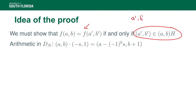That condition is equivalent to saying (a prime, b prime) times H equals (a, b) times H. Using the group law of D sub n as a semi-direct product, (a, b) times H contains just (a, b) itself — from multiplication by the neutral element — and (a minus minus 1 to the b times S, B plus 1) from multiplication by the other element (minus S, 1) of H. So there are really two possible elements in (a, b) times H.